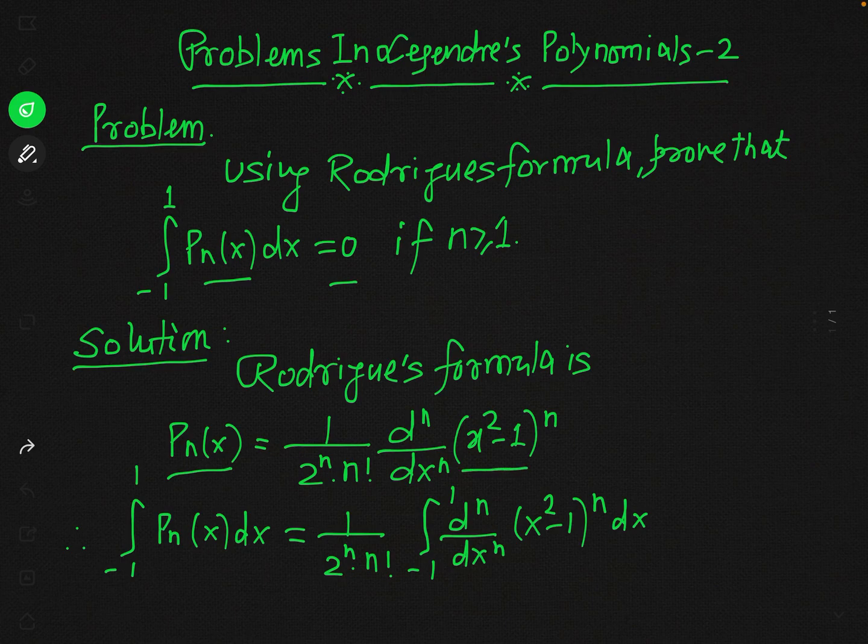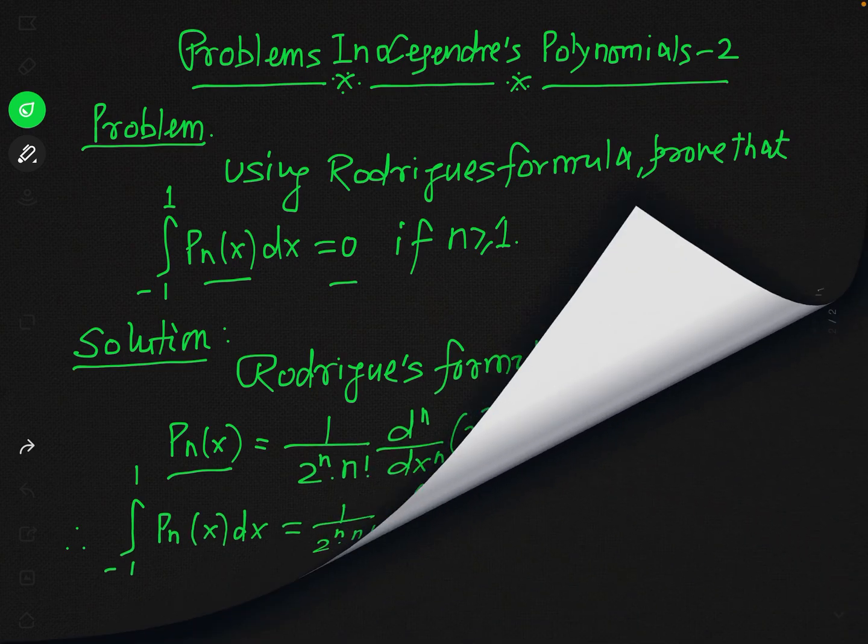The Rodrigues formula is: Pn(x) = 1 over 2^n into n factorial, times d^n/dx^n of (x² - 1)^n. Now we have to evaluate the integral of Pn(x). The integral of Pn(x) dx from minus 1 to plus 1 equals 1 over 2^n·n! times the integral from minus 1 to plus 1 of d^n/dx^n (x² - 1)^n. Now we will simplify the RHS of this equation.